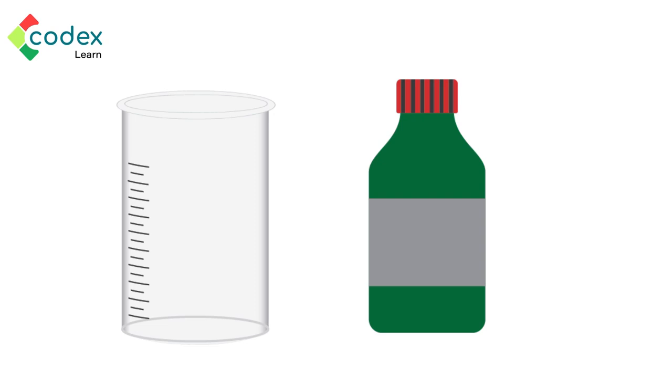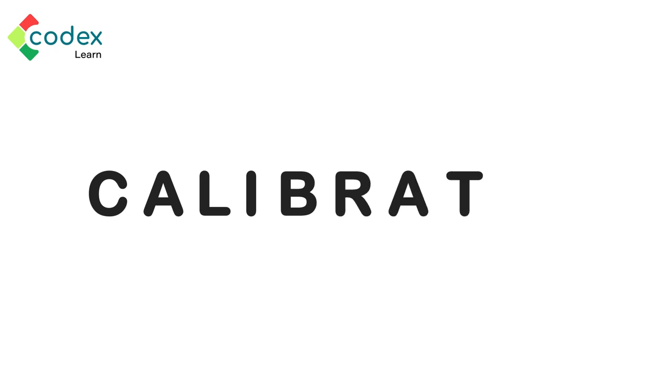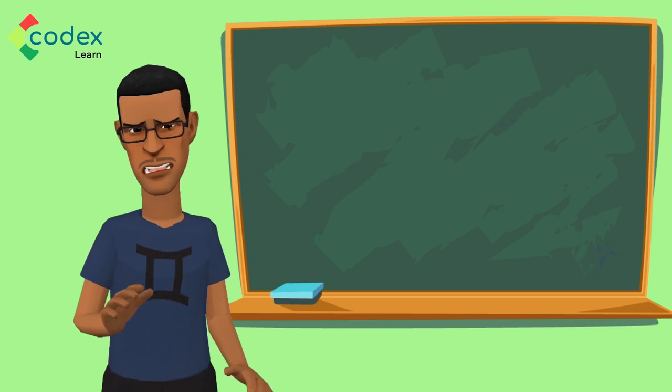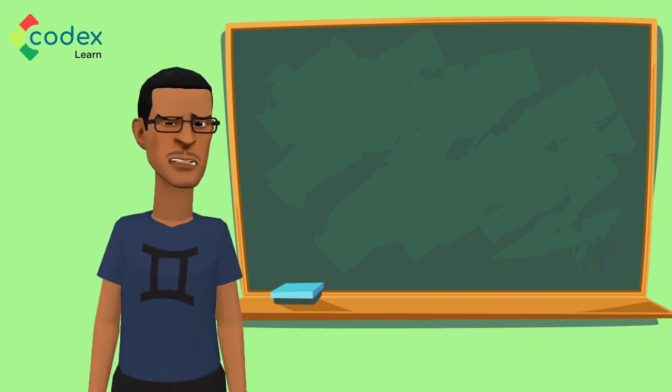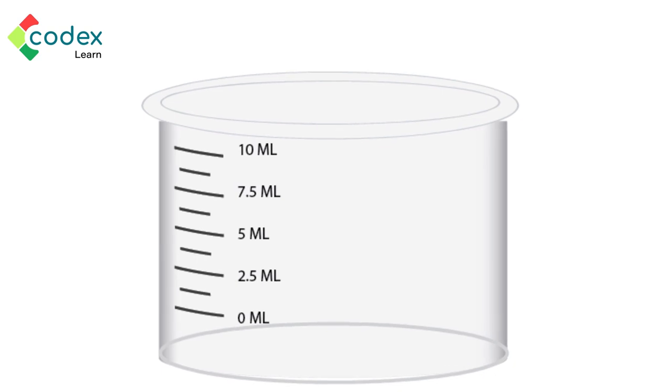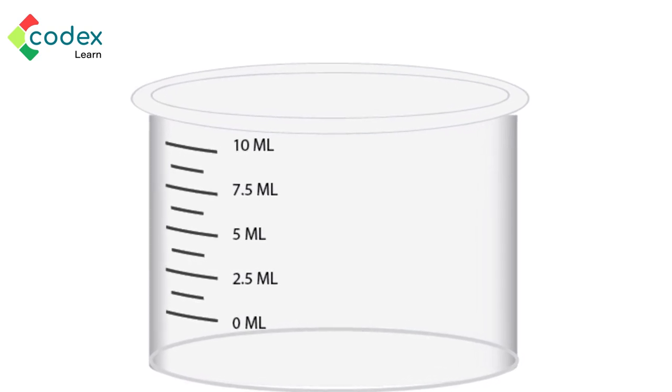Great! Here is a calibrated cup for the syrup. Calibrated is spelled C-A-L-I-B-R-A-T-E-D. Calibrated objects are things that have measurements written on them. This calibrated cup has milliliters written on it, and its short form is called ML.